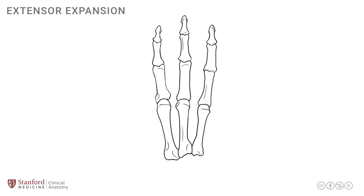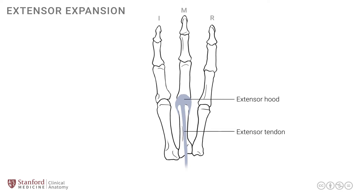Let's start by looking at a simple line drawing of the three digits — the middle, index, and ring finger. We will put the extensor expansion over the middle finger, and we'll start by looking at the extensor tendon that makes its way over the metacarpal and then divides and extends over the metacarpophalangeal joint in the form of a hood, known as the extensor hood. This extensor hood provides further support over the dorsum of the metacarpophalangeal joint, and it's an expansile connective tissue.